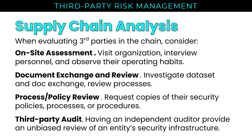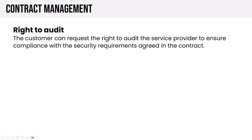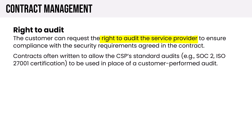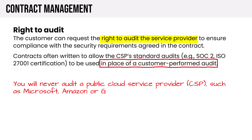Third-party audits can happen when there's enough risk involved with a mission-critical vendor, having an independent auditor provide an unbiased review of an entity's security infrastructure. In the cloud service provider space, right-to-audit exists in many contracts, but contracts are often written to allow CSPs to provide their standard audits in place of a customer-performed audit. You will never audit a big public cloud provider like Microsoft, Amazon, or Google — you'll use their standard third-party audits, which are very easy to obtain.